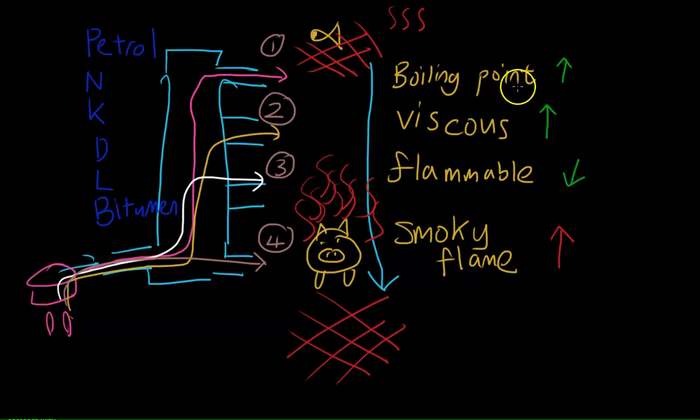With this example, petrol will have lower boiling point, low viscosity, high flammability, less smoky flame. Whereas if you go down the column, bitumen has higher boiling point, higher viscosity, lesser flammability, increased smoky flame. Hopefully it's clear.